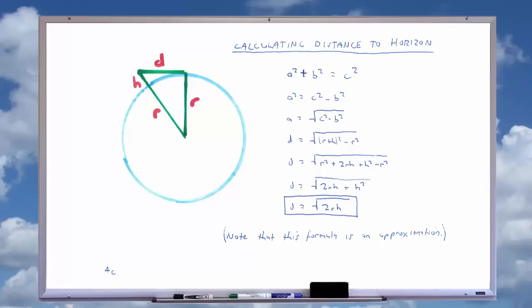Now, for the purpose of an approximation formula, we can drop the h^2 because it's going to be insignificant compared to the other values within the formula. And that leaves us with the formula, the distance to the horizon d = sqrt(2rh).